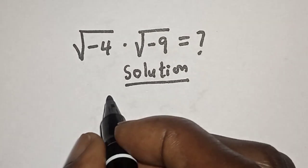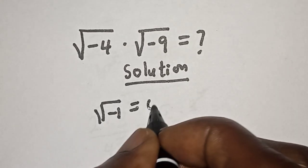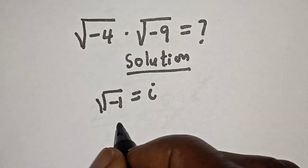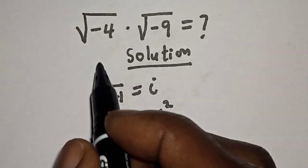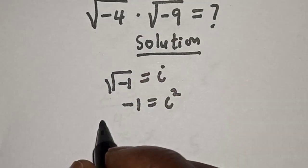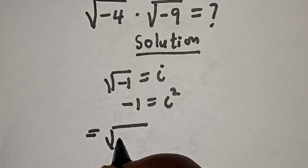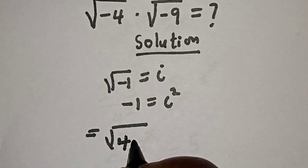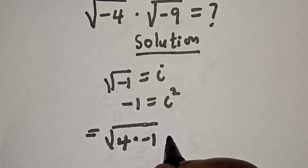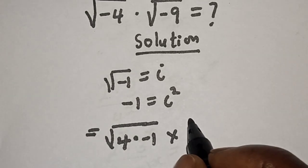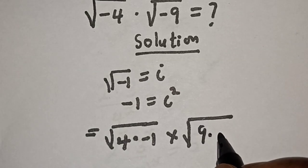Take note of this rule: the square root of minus one is equal to i, and minus one is equal to i squared. So square root of minus four is the same thing as square root of four multiplied by minus one, multiplied by square root of nine multiplied by minus one.